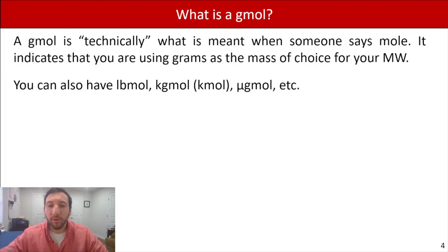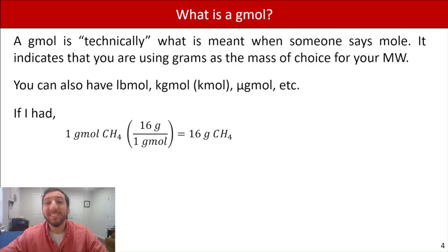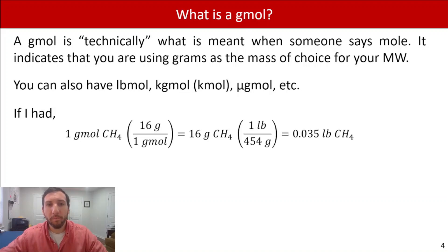For example, if I had one gram mole of methane, CH4, and I multiply by the molecular weight, for a gram mole I'm working with grams, so I multiply by 16 grams per gram mole — I would have 16 grams of methane. And if I wanted to look at how many pounds that is, we do a quick conversion multiplying by one pound per 454 grams, and you'll see that it's 0.035 pounds of methane.